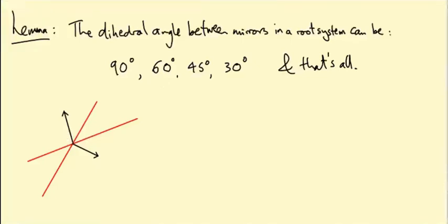How would I actually calculate the angle between two mirrors? In higher dimensions, these mirrors are hyperplanes, so they're very high-dimensional objects. What I do is take the vector orthogonal to a mirror and the vector orthogonal to the other mirror, and I measure the angle between those two vectors.